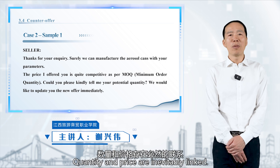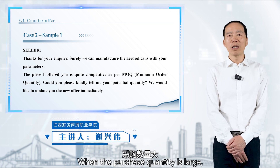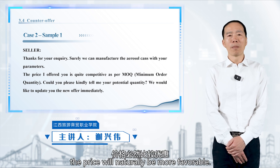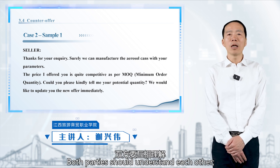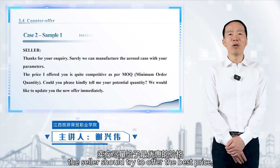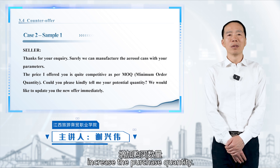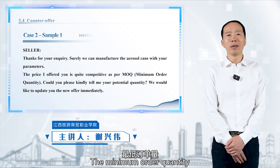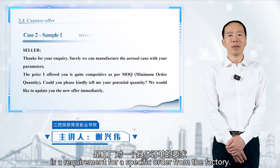Now let's study the second case. Quantity and price are inevitably linked — when the purchase quantity is large, the price will naturally be more favorable. Both parties should understand each other: the seller should try to offer the best price, and the buyer should also try to increase the purchase quantity. The minimum order quantity is a requirement for a specific order from the factory.